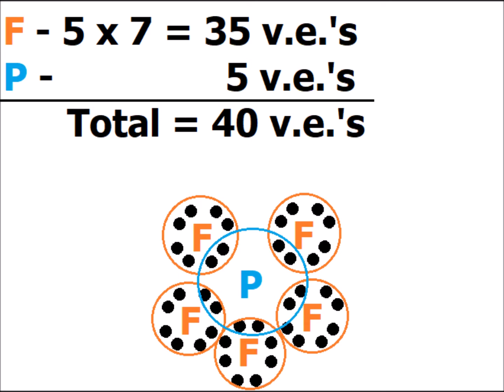We are allowed to expand the octet — go beyond 8 electrons on the central atom — when we are in the third row or below on the periodic table.